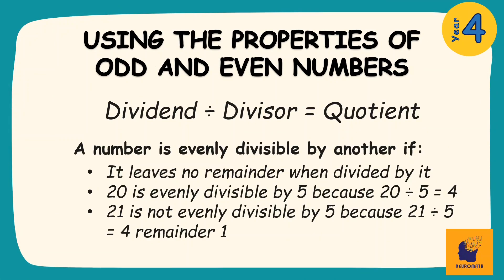Before we get into it, there are a few terms we need to be familiar with. The first three are dividend, divisor, and quotient. These are parts of a division number sentence. The dividend is the amount you want to divide up. The divisor is the number we divide by, and the quotient is the answer we get after we divide.